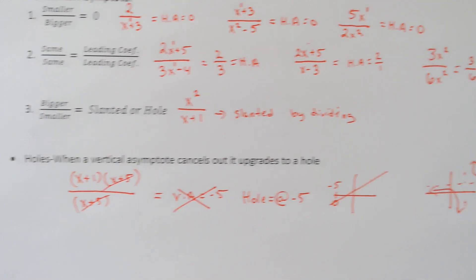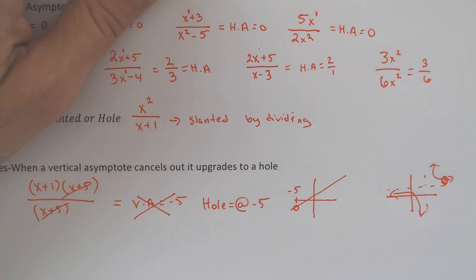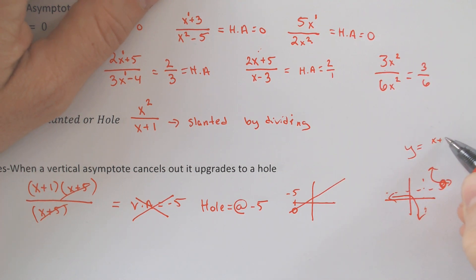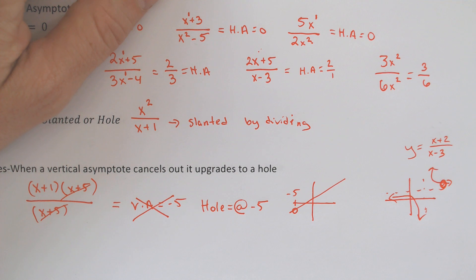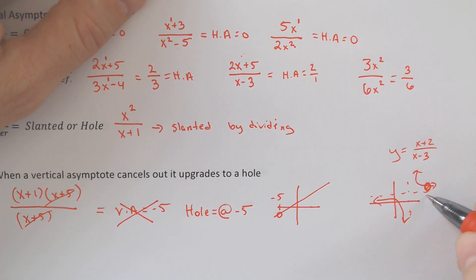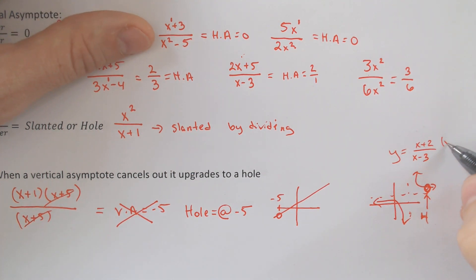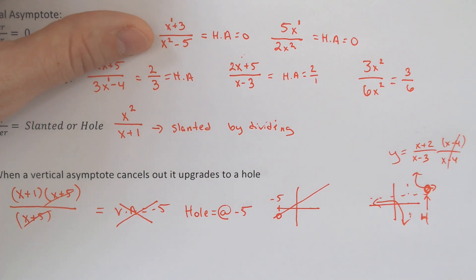So, point here is, holes occur when a vertical asymptote cancels out. It upgrades to a hole. It is no longer a vertical asymptote. This is a completely different problem. This would be something where we still had, like, x plus 2 and x minus 3 left over, but then something canceled out because, you know, you just notice my hole is at, like, positive 4 or something like that, which means that we would have originally had some x minus 4s cancel out, all right?